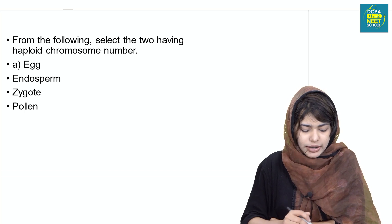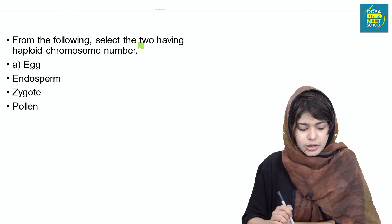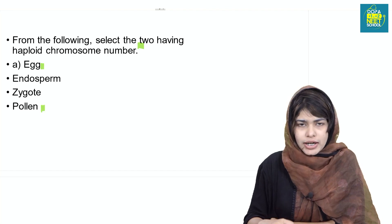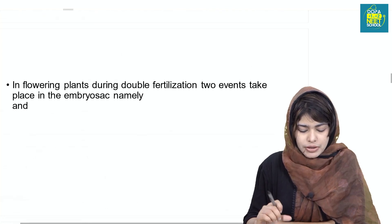This is haploid — we have two. Select the two structures: we have egg and pollen.